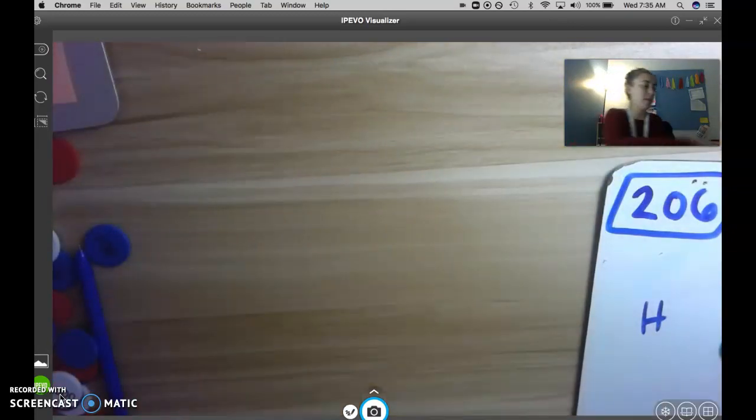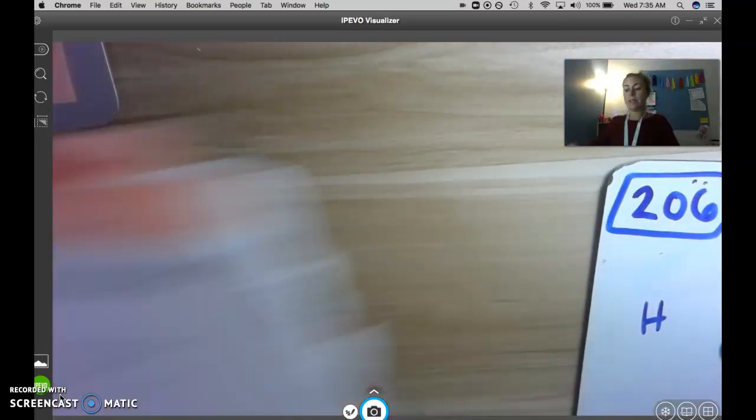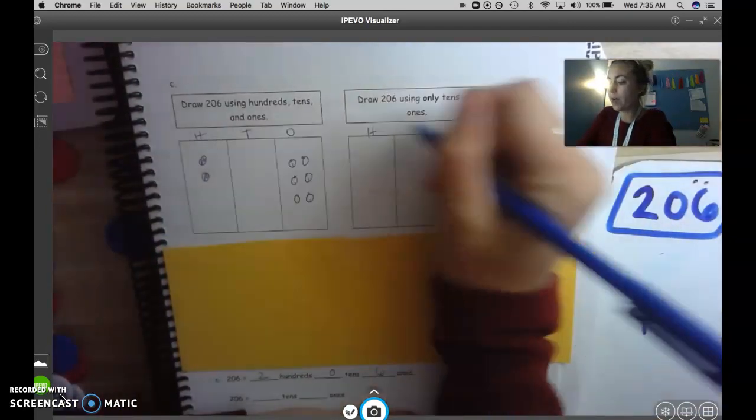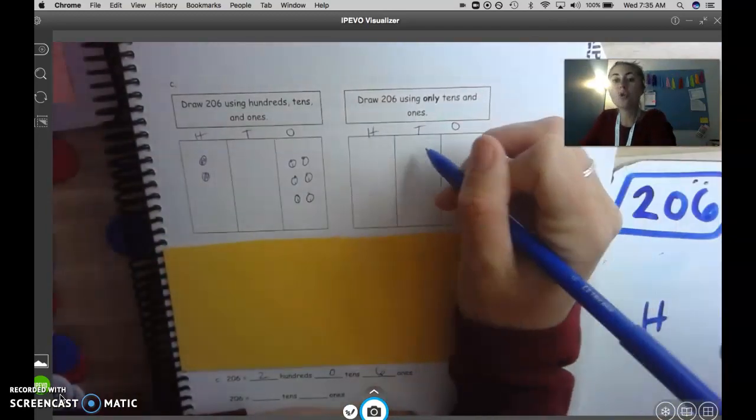Now I can draw it on my paper and this is the same thing you guys are going to be doing today on your screens. So it says only tens and ones. So I've got my hundreds, tens and ones and I'm going to draw 20 tens.